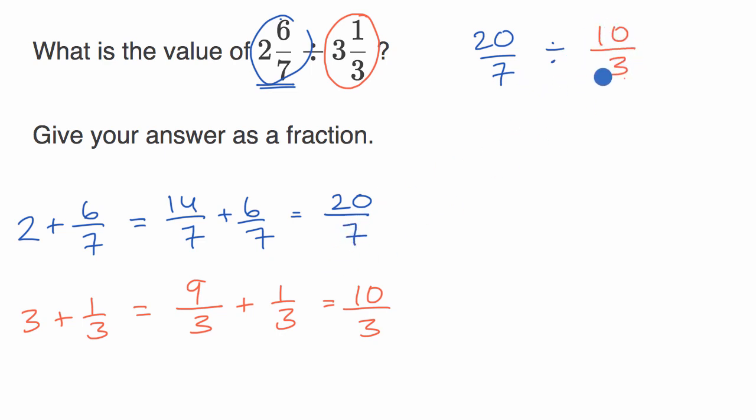And now we just have to remember how to divide fractions. If I divide by a fraction, that's the same thing as multiplying by its reciprocal. So this is going to be equal to 20 divided by seven times the reciprocal of this. The reciprocal of ten over three is three over ten, and that is going to be equal to.